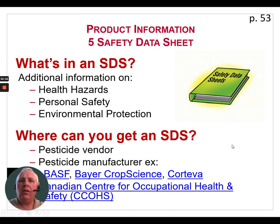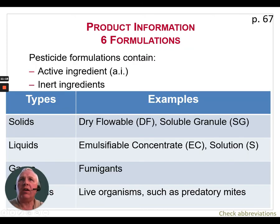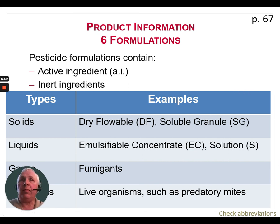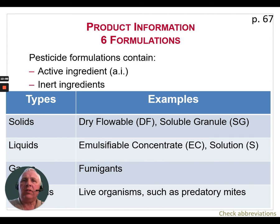From chapter 6, pesticide formulations: a pesticide formulation contains two things — the active ingredient and the inert ingredients. There are different types of formulations. Solids include dry flowables, soluble granules, and items like ear tags on cattle. Liquids include emulsifiable concentrates and true solutions. Gases include fumigants primarily. And live organisms include things like predatory mites released into a greenhouse.